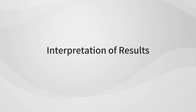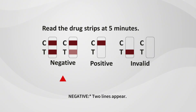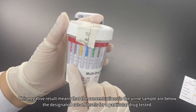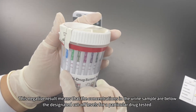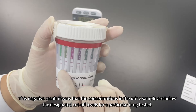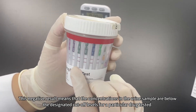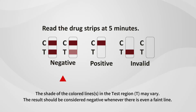Interpretation of results. For a negative result, two lines appear: a colored line appears in the control region (C) and a colored line appears in the test region (T). This negative result means that the concentrations in the urine sample are below the designated cutoff levels for a particular drug tested. The shade of the colored lines in the test region (T) may vary. The result should be considered negative whenever there is even a faint line.